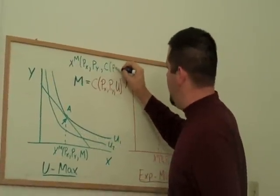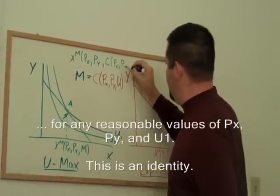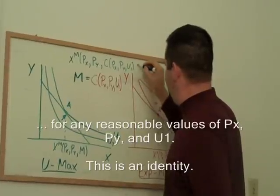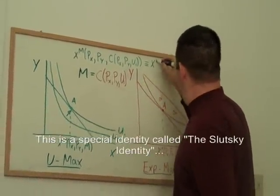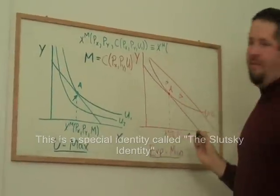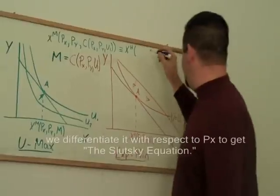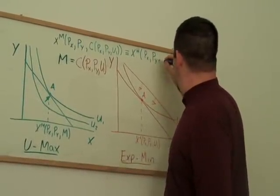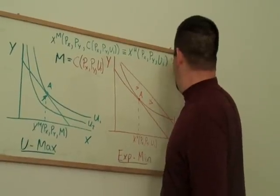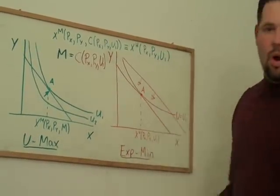I'm going to substitute in here the cost function. And so at this utility level and at that expenditure level, we get the same quantity, and at the same quantity for our Hicksian and our Marshallian.